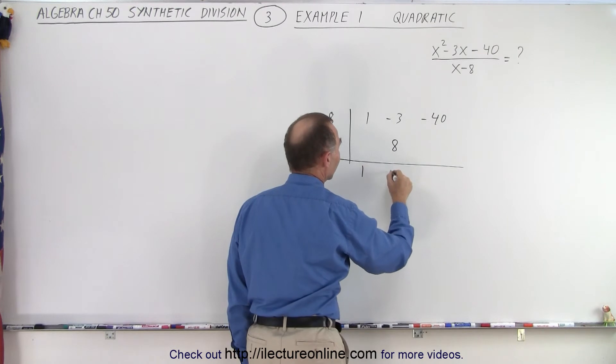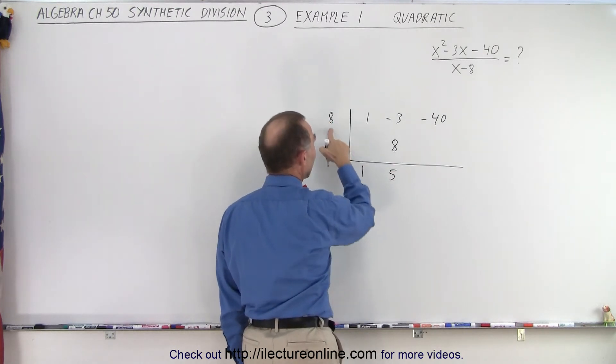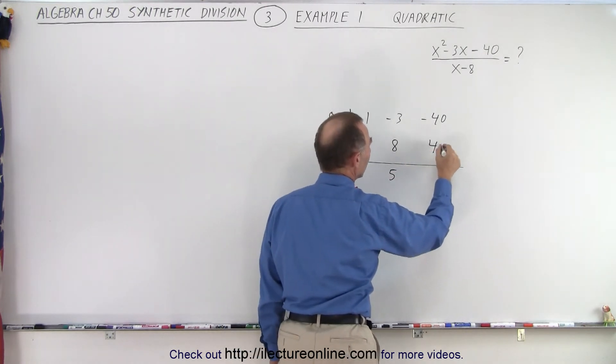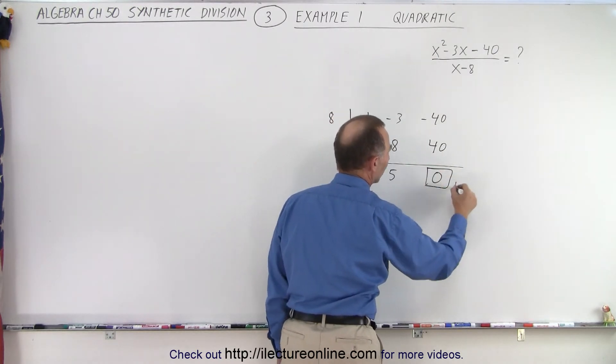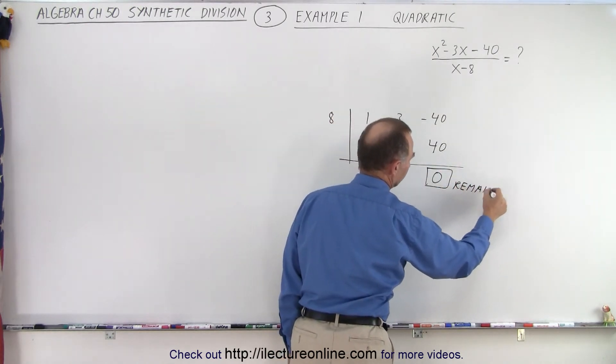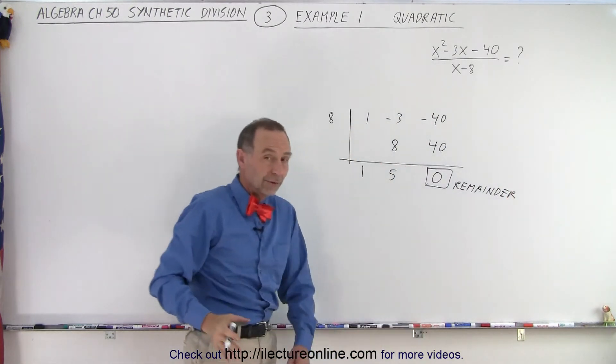Negative 3 plus 8 is a positive 5. And then 8 times 5 is 40. We add the two numbers together. We get 0. Remember this represents the remainder and since it's 0 there is no remainder.